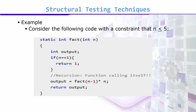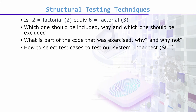We have a constraint that we have applied: N has to be less than or equal to 5. This means whatever value you take for the input — there is one input — and N has to be less than or equal to 5.